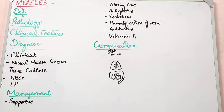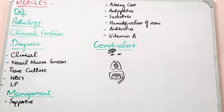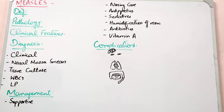Assalamualaikum warahmatullahi wabarakatuh. Because pediatric diseases are infectious diseases, we have to cover measles. This is a very common disease and it is easy to read. So if you revise it, it will be easy. The key fact is that measles is a viral infection which has a rash, and the rash is maculopapular.